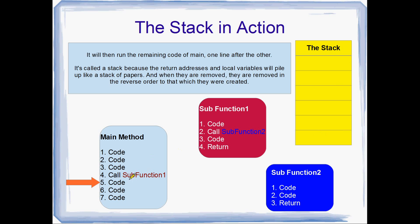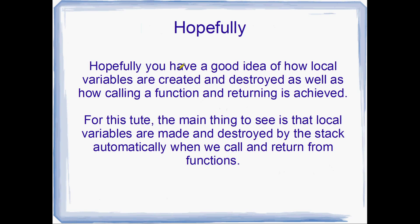The important thing to notice is that it pushes the return values on the stack in a particular order, and pops them off in the opposite order. Stacks traditionally have two operations: push and pop. The order that you pop values off will always be the opposite to the order you pushed them on. What you'll see is that it returns from functions in the exact reverse order — which is exactly what we want. The main thing to note is that local variables are made and destroyed by the stack automatically when we call and return from functions.